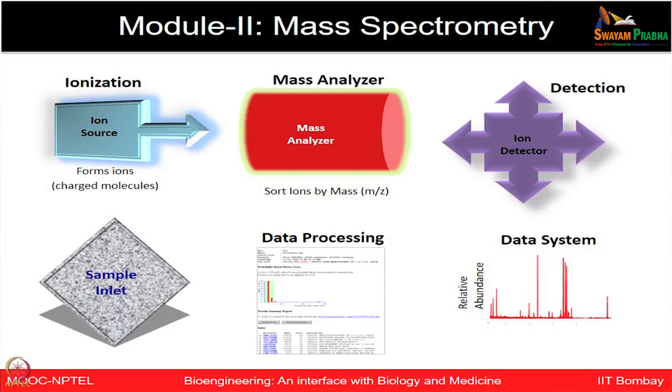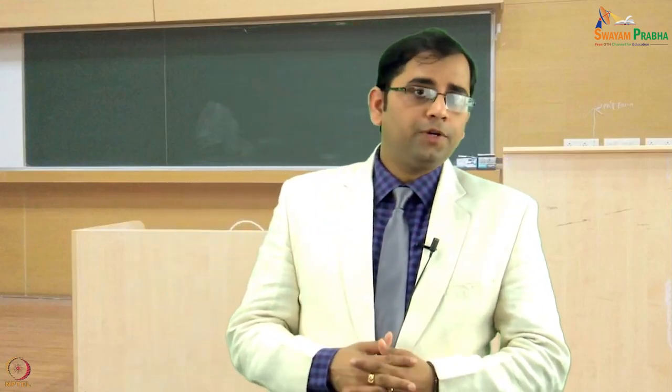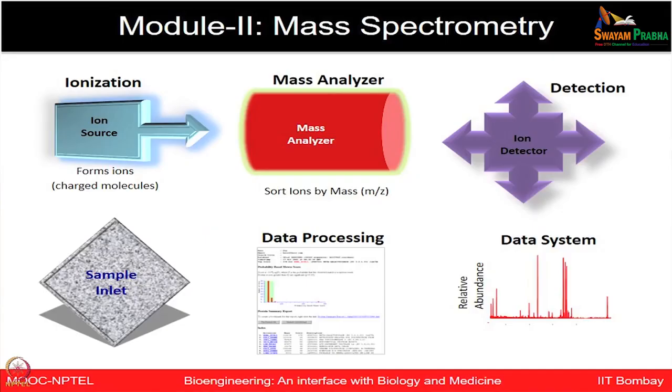Some of the popular mass analyzer configurations include TOF (time of flight), quadrupoles, orbitraps, and ion traps. This slide shows the major steps involved in mass spectrometry-based proteomics: you have a sample inlet especially via liquid chromatography; the peptides come to the mass spectrometer and enter the ionization source; they then enter the mass analyzers where ions are sorted based on mass-to-charge ratio; they are detected on the detector; and then the data can be analyzed using databases for identification as well as relative abundance or quantitation. Let us now watch this animation to get an overview of mass spectrometry-based proteomics.